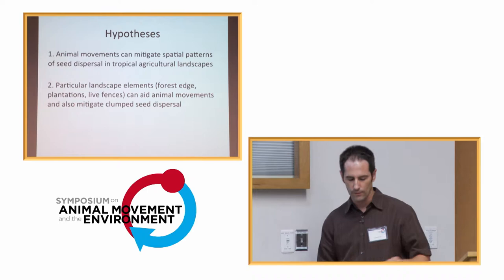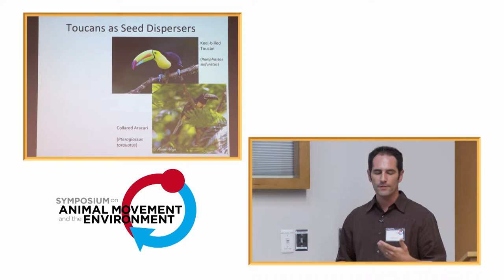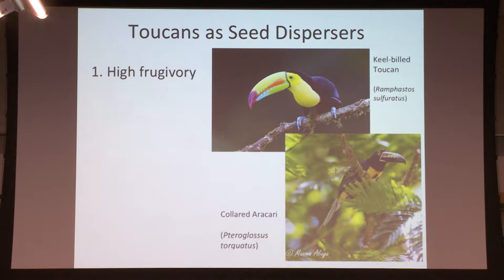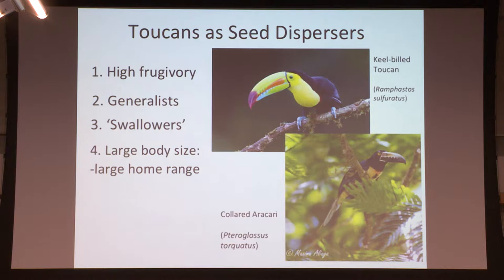So how do we do this? The answer, of course, is with toucans. Why are toucans good seed dispersers? Besides who wouldn't want to study toucans — toucans are highly frugivorous generalists. They've been documented to consume dozens of different seed species of a large range of sizes. They're termed 'swallowers' — they swallow fruits whole and defecate or regurgitate seeds without damaging them. They have a large body size, which has been correlated with large home ranges, large movements, and high seed retention. And importantly, they use fragmented habitat.